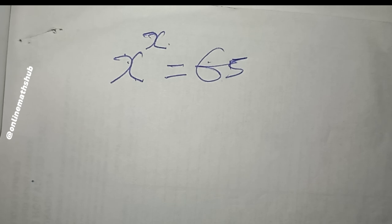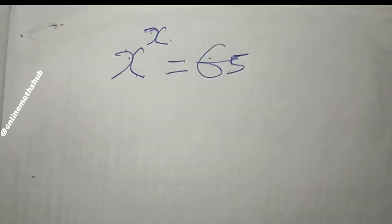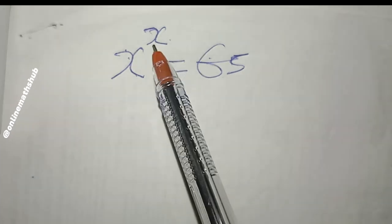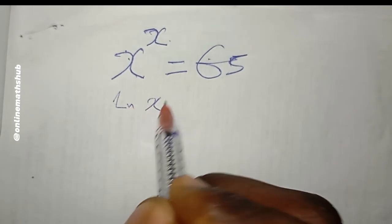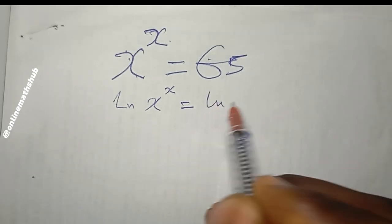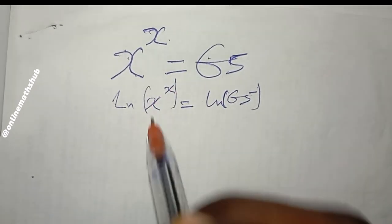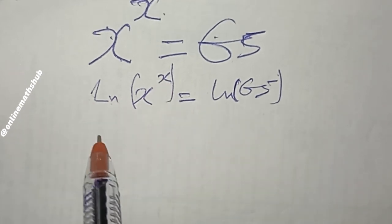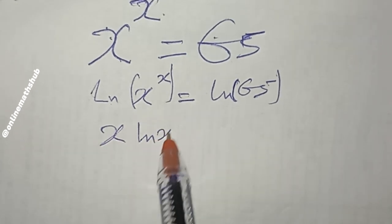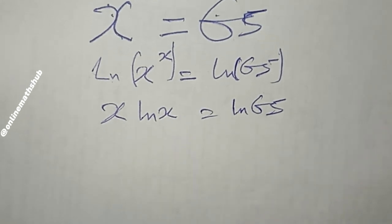Looking at this equation, the most basic thing to do is to take the natural log of both sides so I can bring down this x. Doing that, I have: ln(x^x) = ln(65). Using the properties of natural log, I bring down the exponent, giving me x·ln(x) = ln(65).